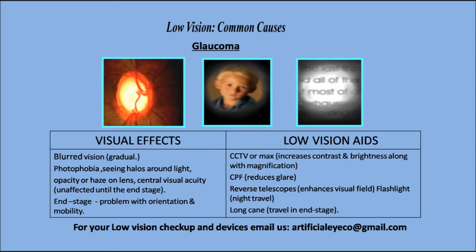Looking into glaucoma — what are the visual effects and what type of low vision aids can help a person suffering from glaucoma? In case of glaucoma, the visual effect will be blurred vision, and this will be very gradual. The person will have photophobia, not being able to look towards light or sunlight, seeing halos around light, and opacity or haze on the lens. Central visual acuity will remain unaffected until the end stage of glaucoma, at which point there will be problems with orientation and mobility.